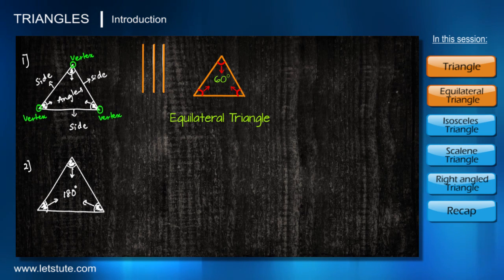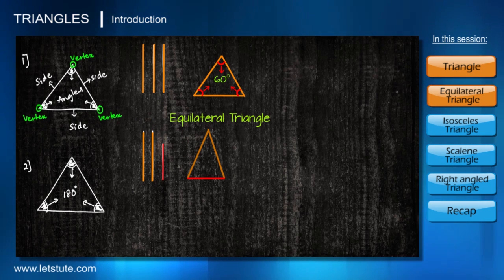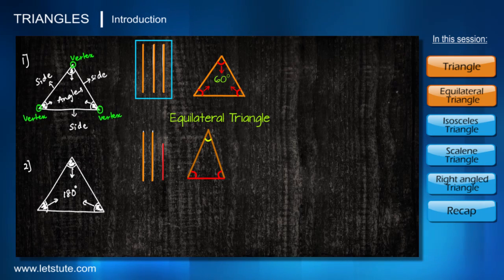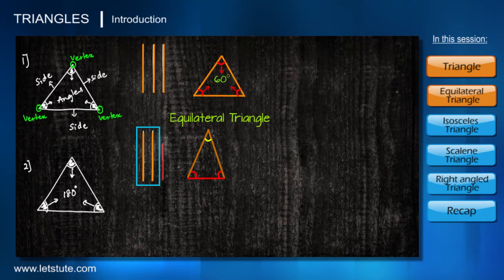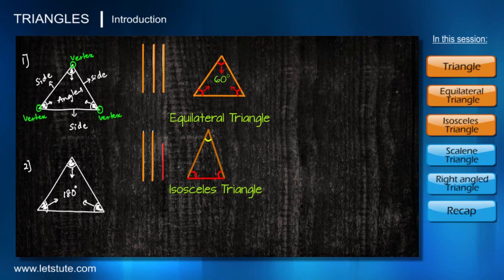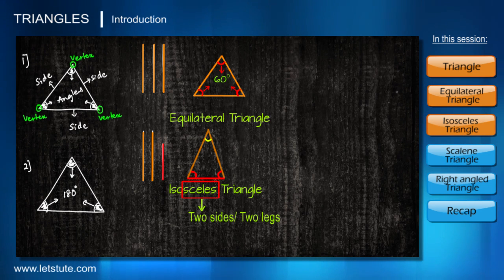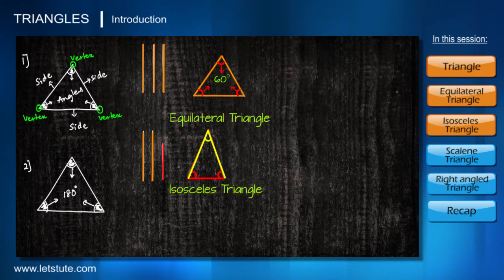Now what if we have only two equal line segments and the third is different? They will form a triangle where only two angles are equal to each other. Notice the relation: three equal sides gave three equal angles; two equal sides give two equal angles. Those two equal angles are opposite to the equal sides. Such triangles are called isosceles triangles — 'iso' means same and 'scelos' means two sides or two legs.